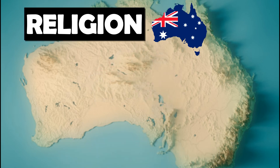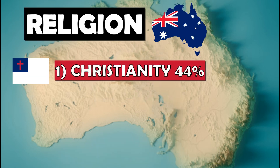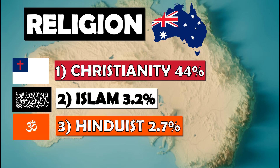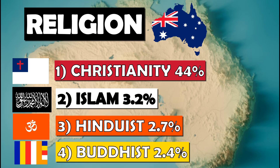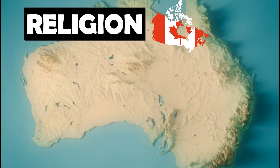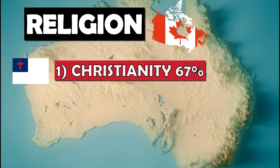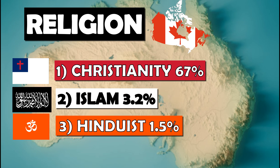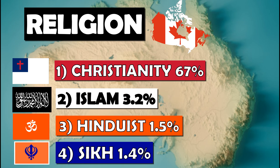Australia's religions are Christianity at 44%, Islam at 3.2%, Hinduism at 2.7%, and Buddhism at 2.4%, with 39% having no religion. Canada is two-thirds Christian at 67%, with Islam at 3.2%, Hinduism at 1.5%, Sikhism at 1.4%, and a smaller 24% having no religion.